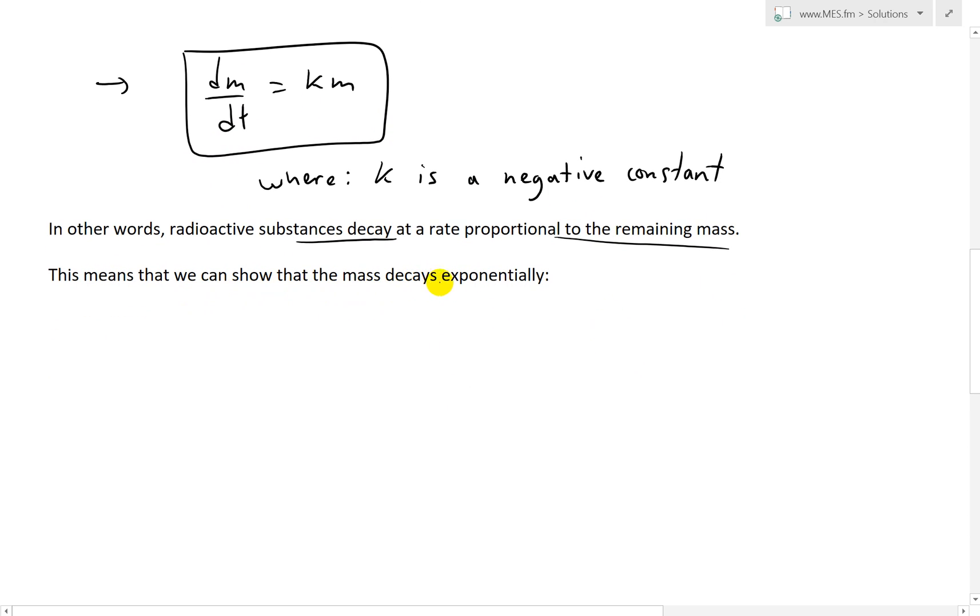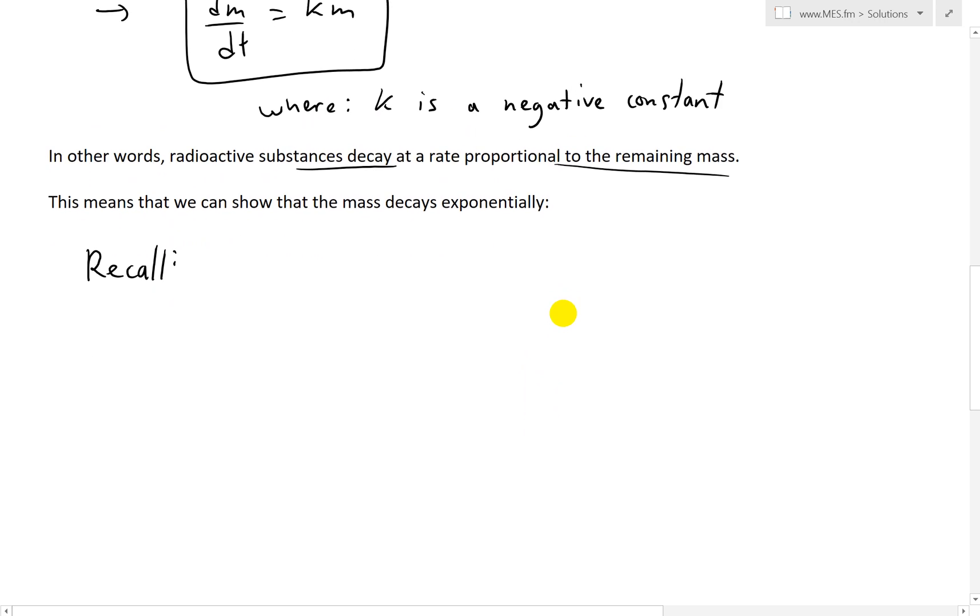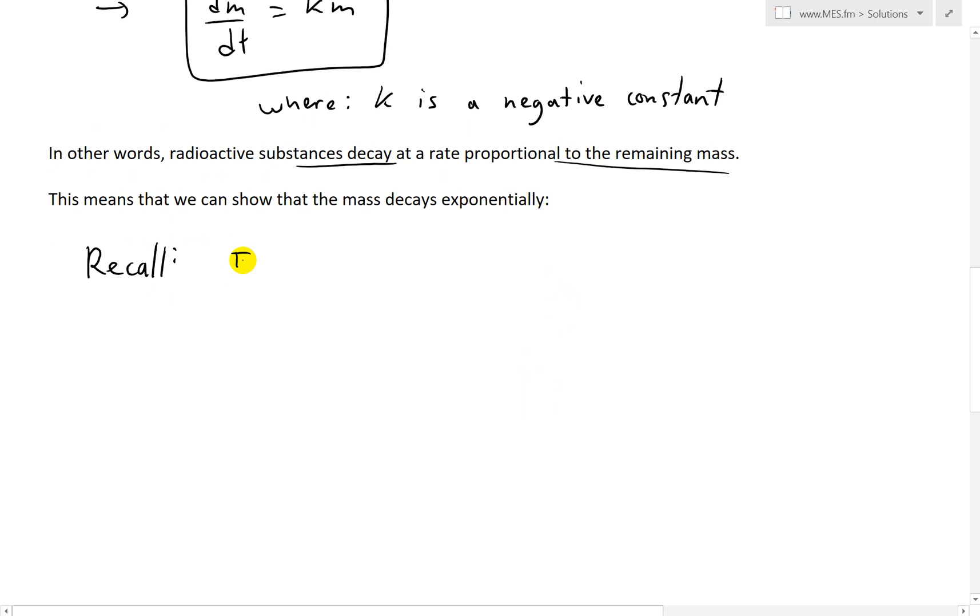This means we can show that the mass decays exponentially, as I explained in my earlier videos. First, I'm just going to recall, instead of reinventing the wheel and solving for m, that if we have a differential equation dy/dt = Ky, and if we have the initial condition y(0) = y₀ or y-zero...